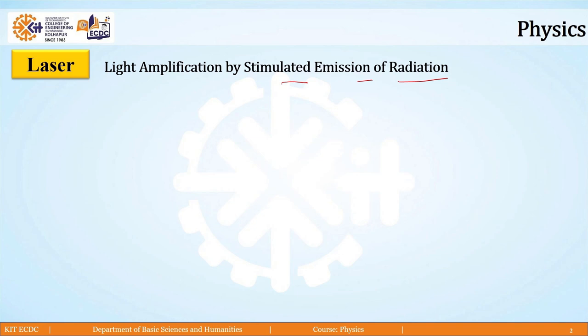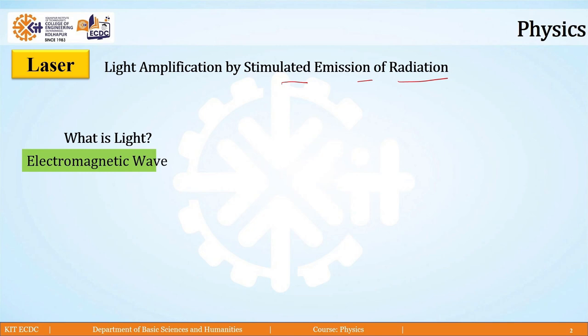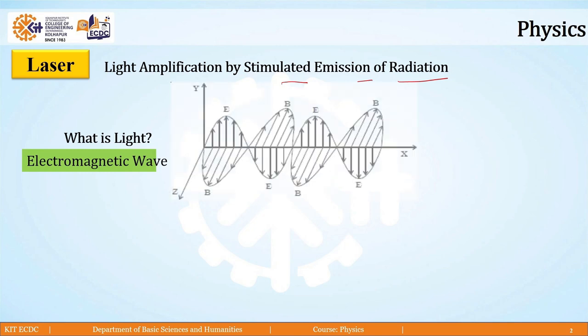To understand this in detail we first should know what is light. Light is an electromagnetic wave. Electromagnetic waves are the vibrations or variations of electric and magnetic field, as you see in the figure. When a wave is there, it has certain characteristics and depending on those characteristics its properties would change.